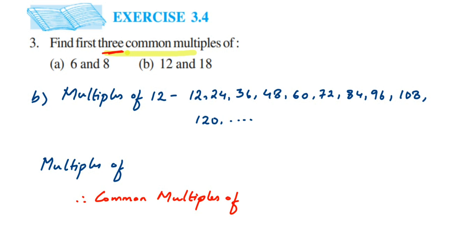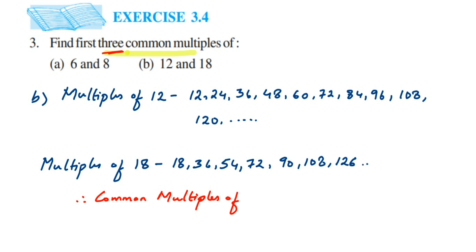Now the multiples of 18: 18, 36, 54, 72, 90, 108, 126. I am going to stop here because we have written up to 120. Let me check if I am getting 3 common multiples. The first common one is 36 — it is present in both. The next is 72, which is also present in both. And next we have 108.